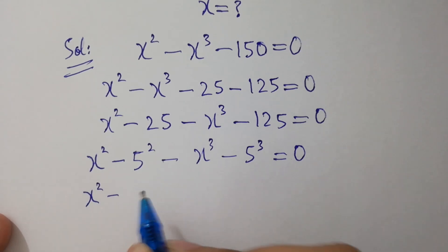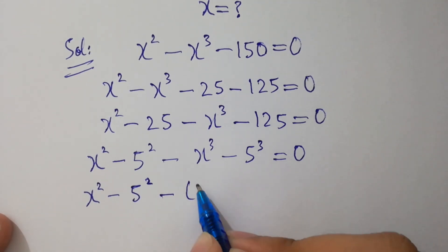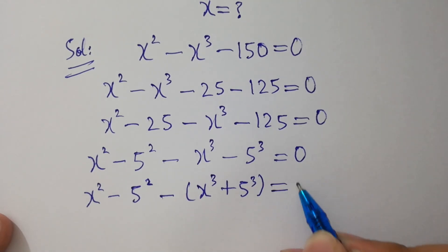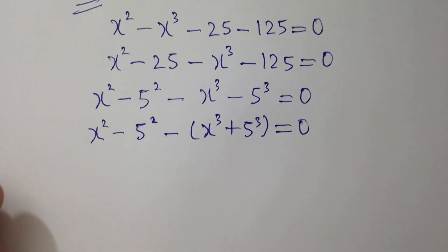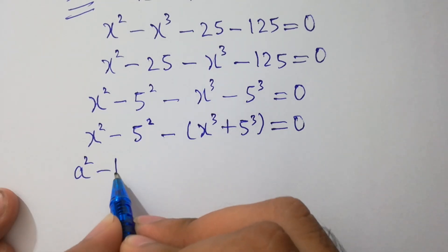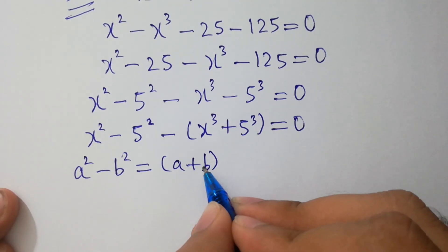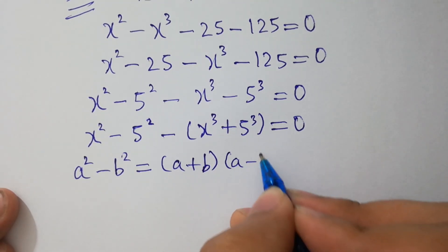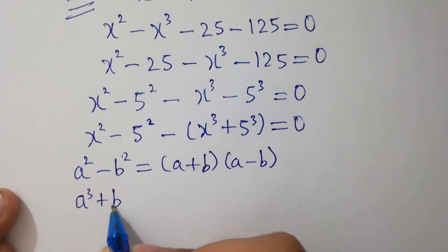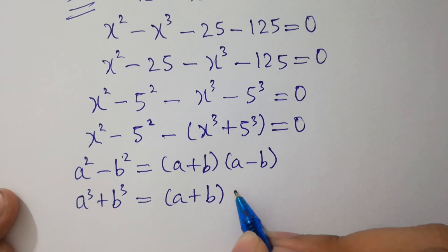We have x squared minus 5 squared, and we factor out minus, giving us x cubed plus 5 cubed equals 0. Since a squared minus b squared equals (a plus b)(a minus b), and a cubed plus b cubed equals (a plus b)(a squared minus ab plus b squared).